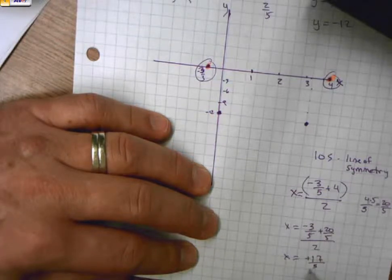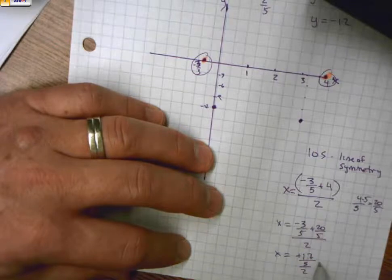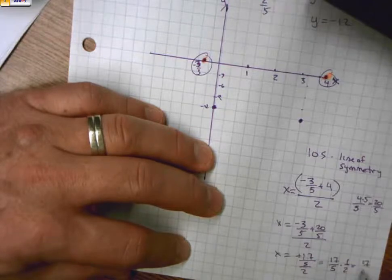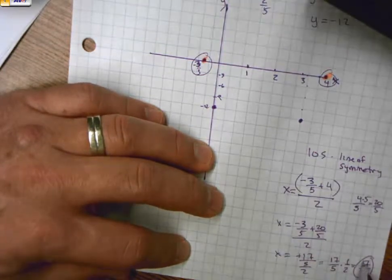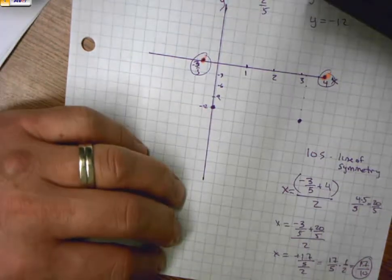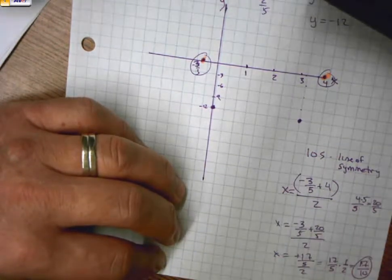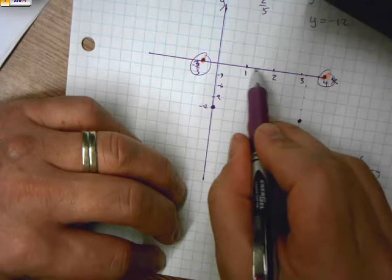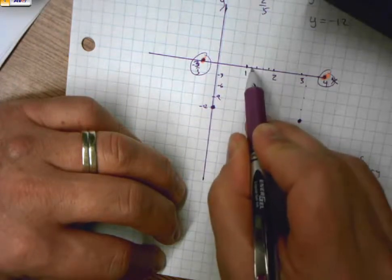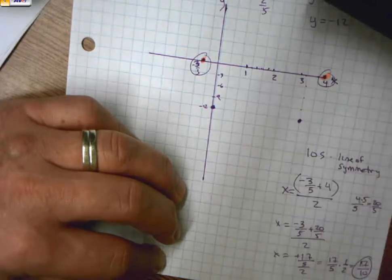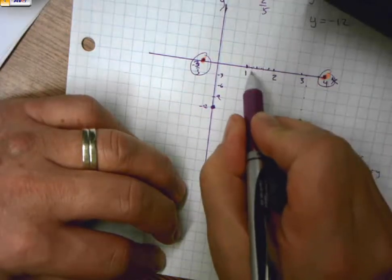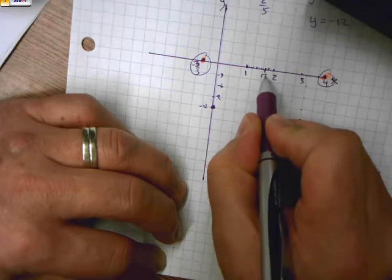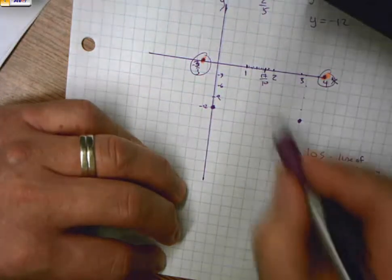Which gives me x is equal to positive 17 over 5 over 2. Well, dividing by 2 is the same as multiplying by 1/2. So this becomes 17/10. In other words, x is equal to 17/10. Well, this is what we got previously. So that's 1 and 7/10, which is 1 and then if these are 5 spaces along here, 1, 2, 3, 4, 1, 2, 3, 4, 5. If we were to cut those in half, 2, 4, 6, 7/10 would be right there. This would be the point 17/10. And if I were to plug that value back into the equation...